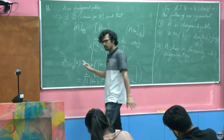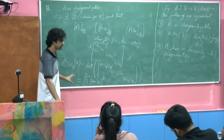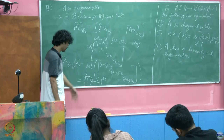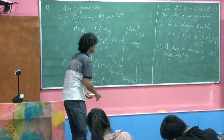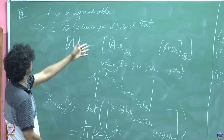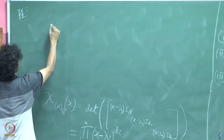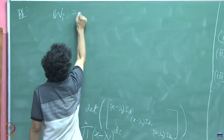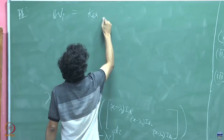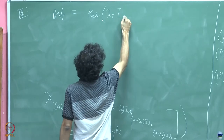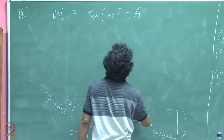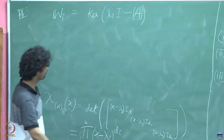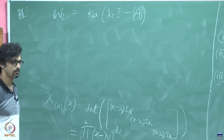Until this point there is nothing non-trivial going on - I am just asking you to get the determinant of a diagonal matrix. Now think about W_i. What is W_i? It is the kernel of (lambda_i * I - A). Of course, you might just say this is the object here subject to this basis. I am not making any distinction between the operator and the matrix - sometimes I might omit that box; you can understand from context that it is a matrix.